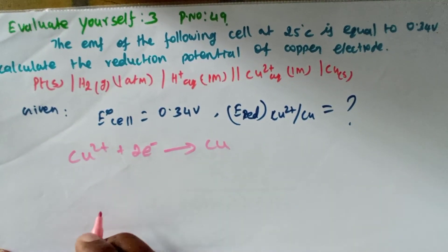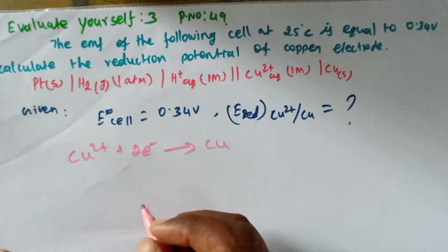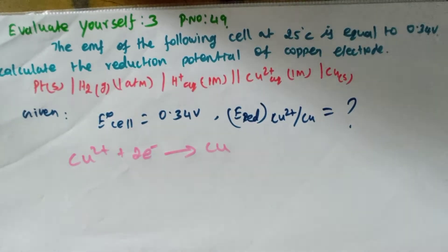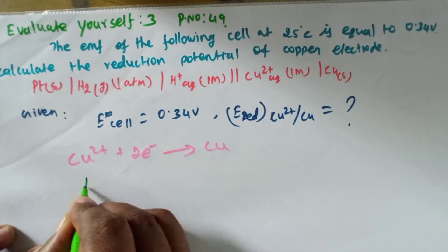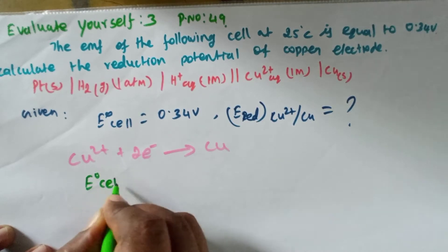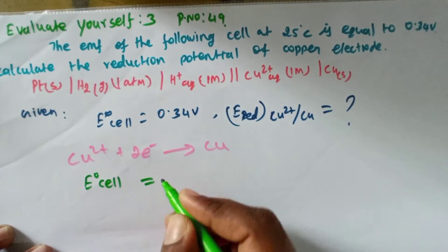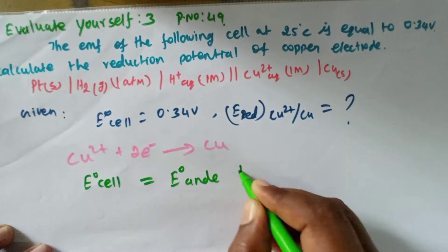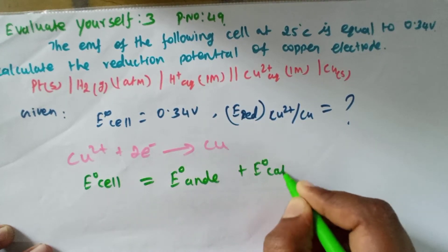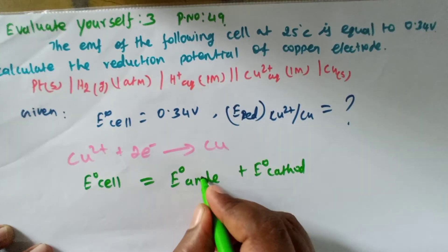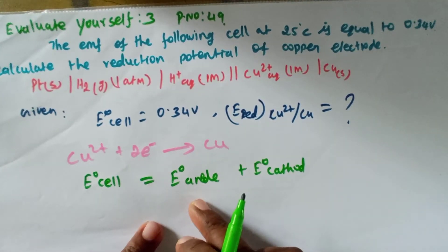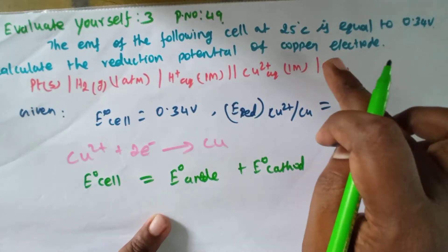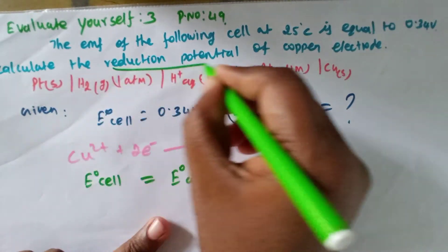So this is equal to: E_cell equals E_anode plus E_cathode. We learn something about anode and we will learn the direction potential.